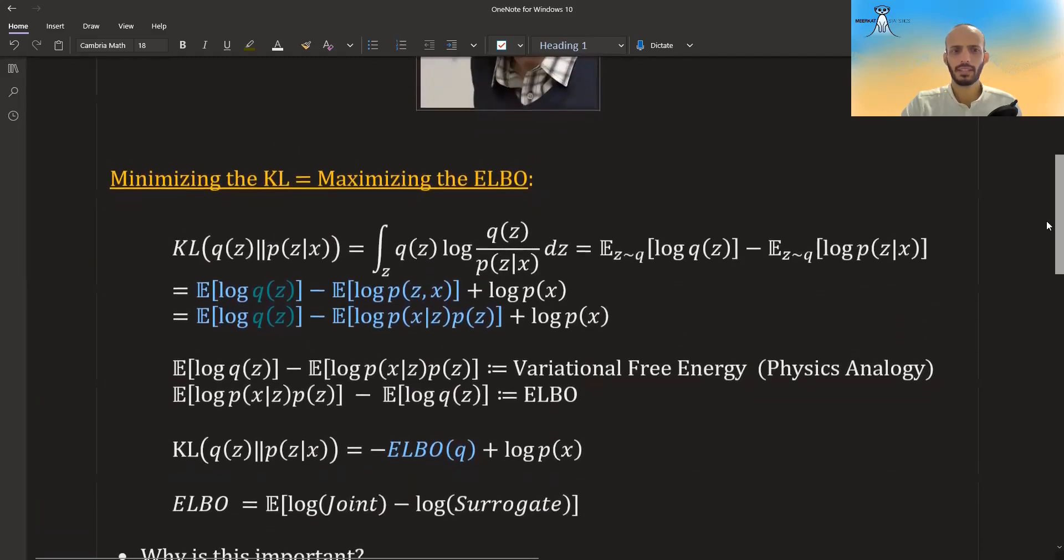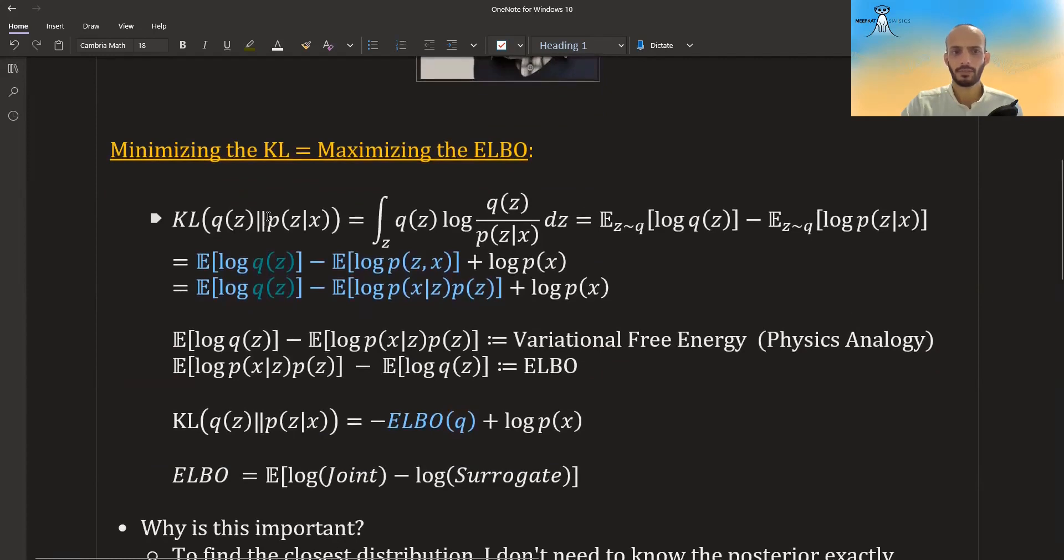Okay, so remember that the KL divergence of Q to P is equal to, in the continuous case, the integral over all the values of Z of q(z) log q(z) divided by the posterior. And this is equal, if we look at this thing as an expected value over q(z), to the expected value over Q of log q(z) minus the expected value of the log true posterior. And now this we can leave the same, and this we can use Bayes rule to invert the relation and first get the joint divided by the evidence. And then we can also break the joint to the likelihood times the prior.